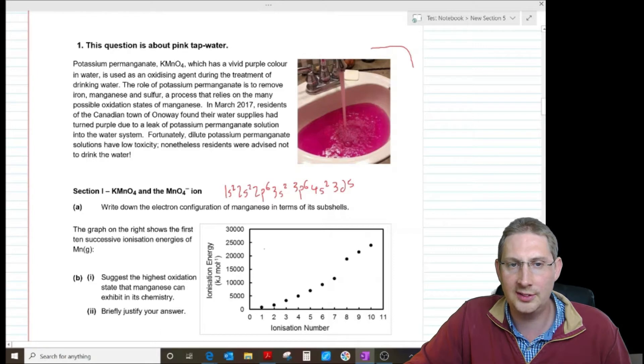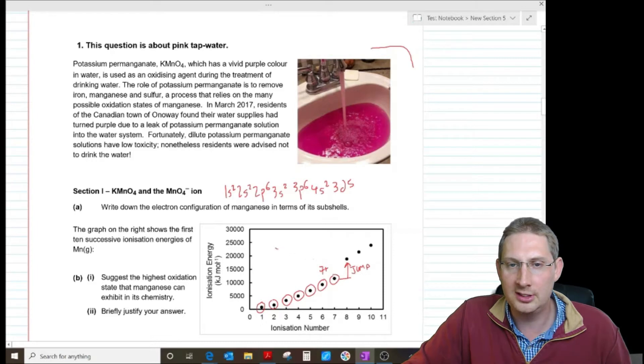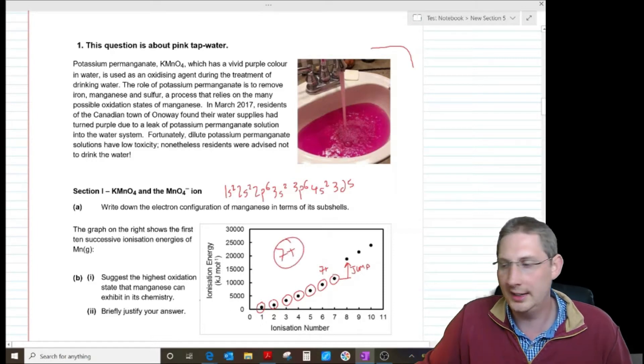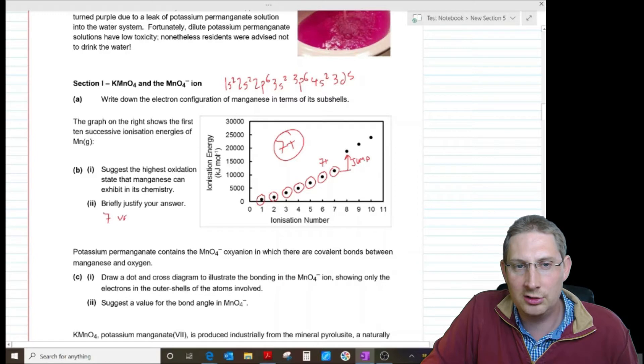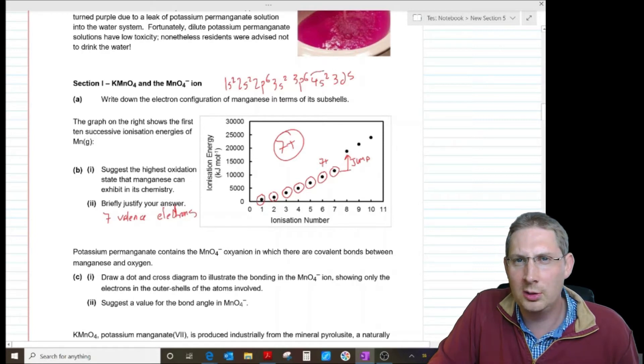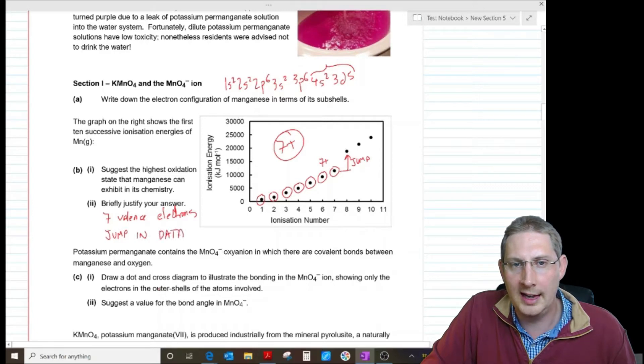The graph on the right shows the first 10 successive ionisation energies of manganese and suggests the highest oxidation state. So that would be forming the one plus ion, two plus, three plus, four plus, five plus, six plus, seven plus ion there, removing seven electrons, but then there is a jump before the eighth one. So we would suggest seven plus is the highest oxidation state that you would see. Briefly justify your answer, seven valence electrons.